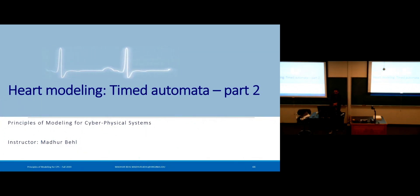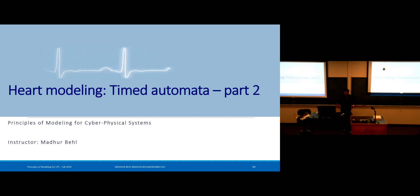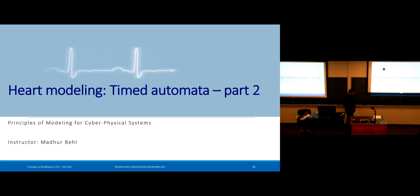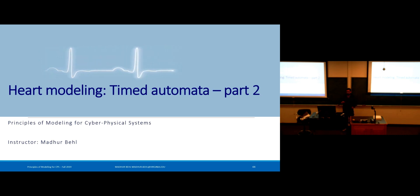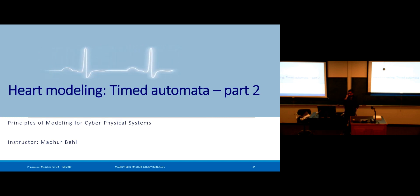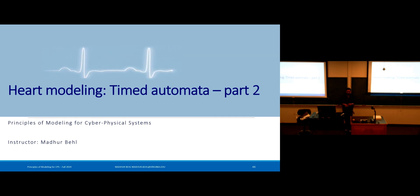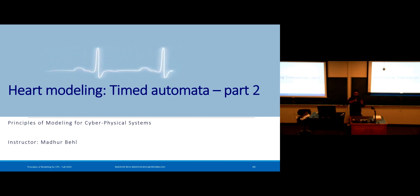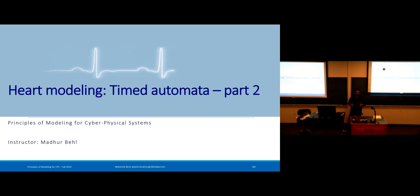Welcome back. Let's continue and wrap up our discussion on using a timed automaton as a special case of a transition system to model the heart. So far we've seen what a timed automaton is — it's a transition system with clocks, resets, and messages or actions. We defined a node automaton for our purposes, where a single node models the switching of states from the rest period to effective refractory, relative refractory, and back to rest.